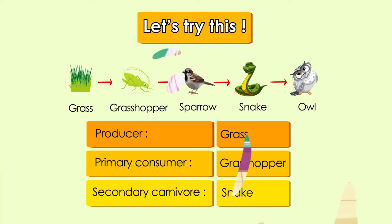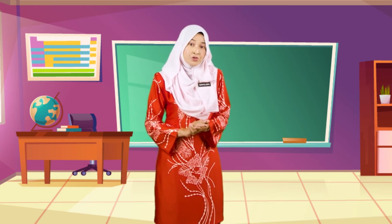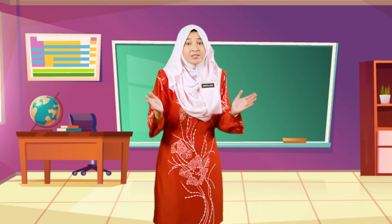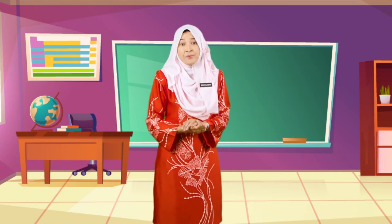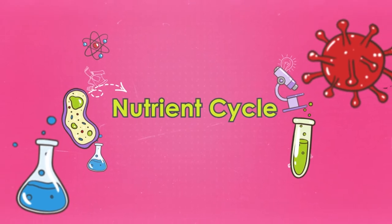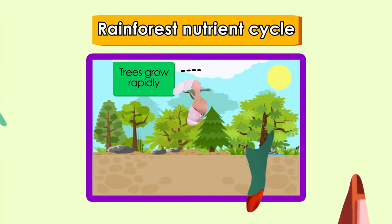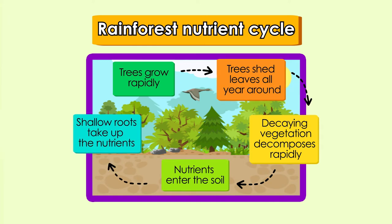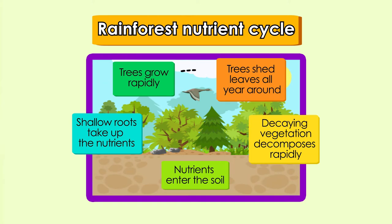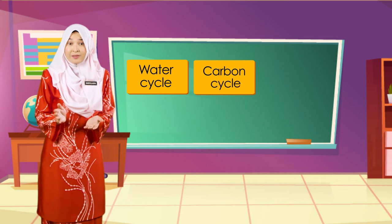In an ecosystem, the transfer of nutrients and energy takes place continuously. Every nutrient and energy obtained is used and returned to the environment to be used again — this cycle is called a nutrient cycle. Water, oxygen, and carbon dioxide are used by living things and then returned to the environment by different living things through various processes. Examples of nutrient cycles are the water cycle, carbon cycle, and oxygen cycle.